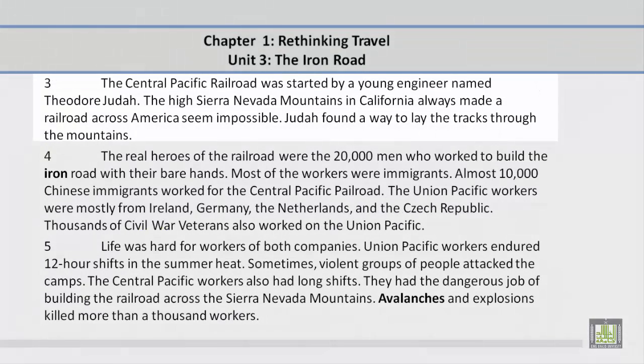Paragraph 3. The Central Pacific Railroad was started by a young engineer named Theodore Judah. The high Sierra Nevada mountains in California always made a railroad across America seem impossible. Judah found a way to lay the tracks through the mountains.